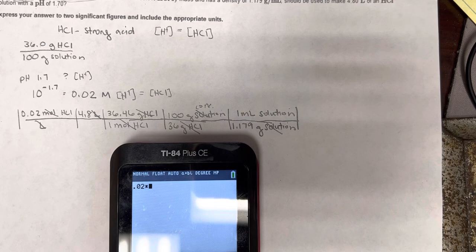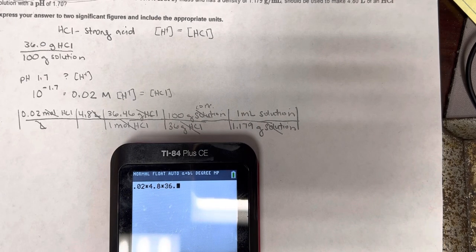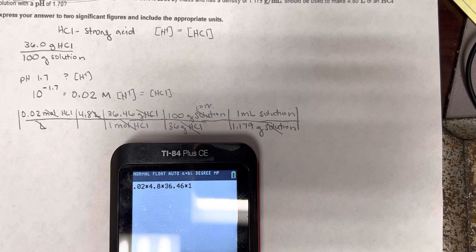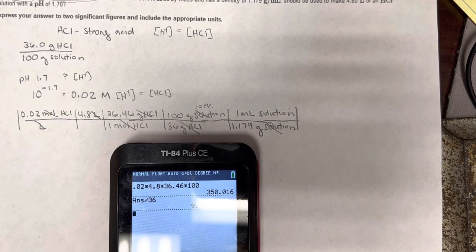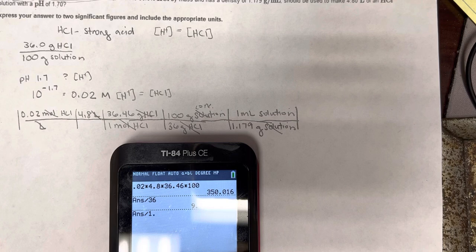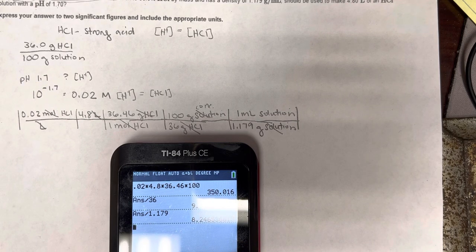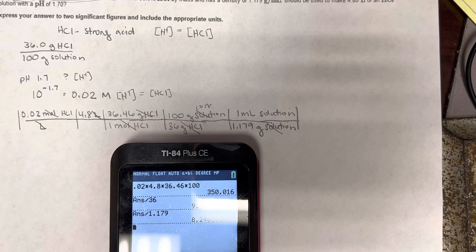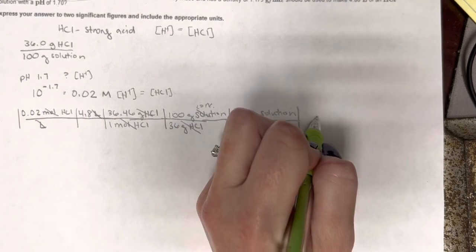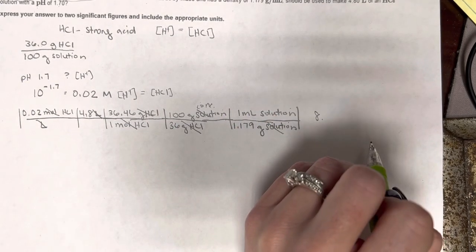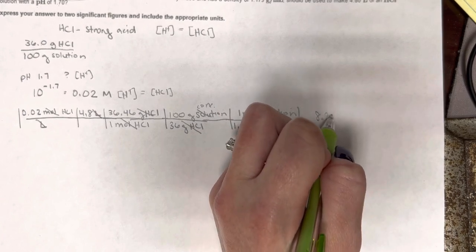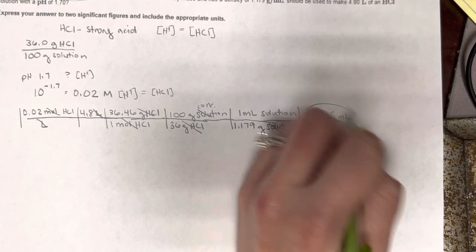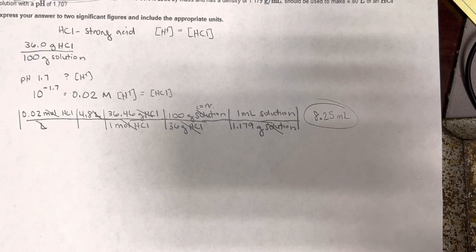So 0.02 times 4.8, 36.46 times 100, divided by 36, divided by 1.179. So we should get somewhere around 8.2 or 8.25. I think, yeah, I think 8.25. There we go.